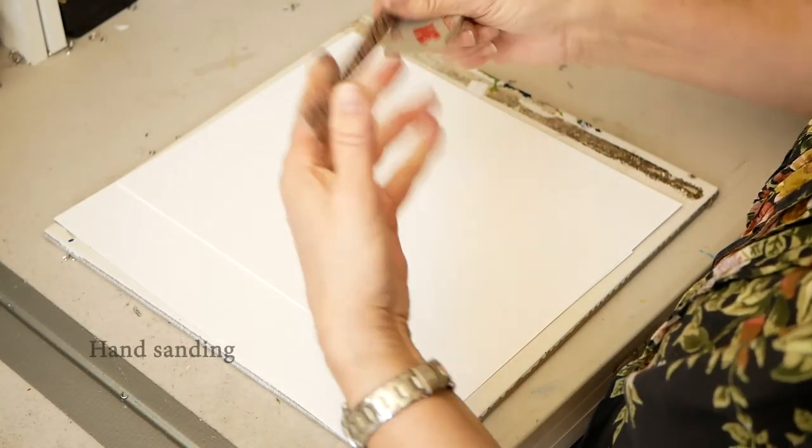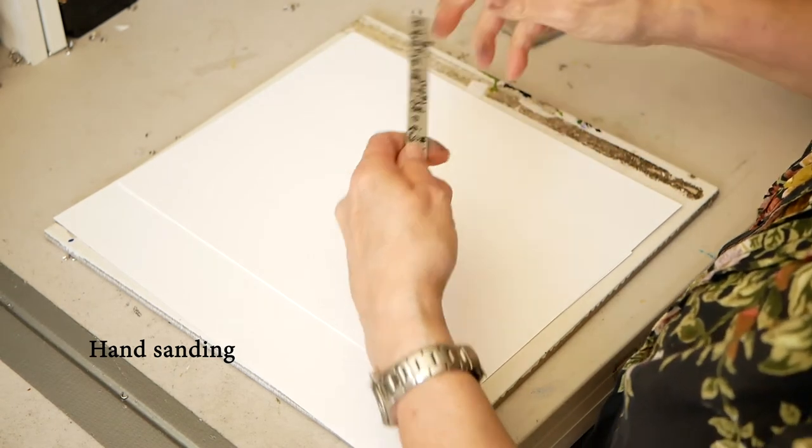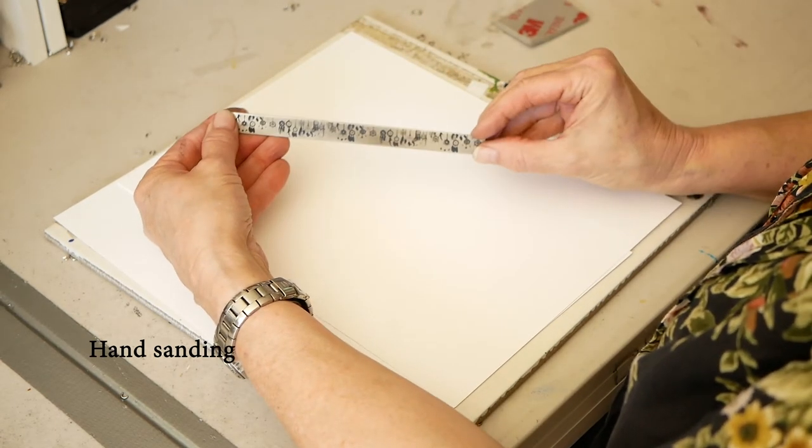We take it to the studio and we sand it with high grit jewelry sanding paper for a high sheen and finish.